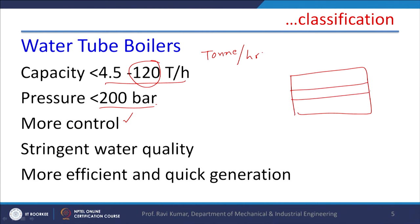If there are fluctuations in demand we normally go for fire tube boilers, but in water tube boilers more controls and greater safety are required, and stringent water quality has to be maintained because water is flowing inside the tube. If any scaling takes place inside the tube or water is contaminated with mud, it will grossly hamper heat transfer. Water tube boilers are more efficient and steam generation is quick. Some water tube boilers are once-through boilers — water enters from one side and steam exits from the other, so there are no drums in those boilers.